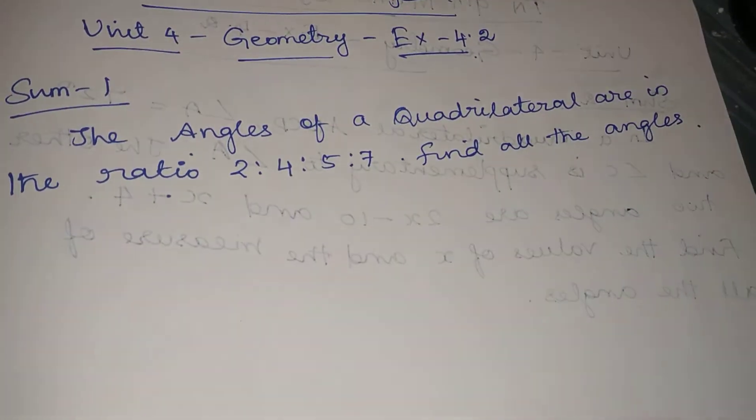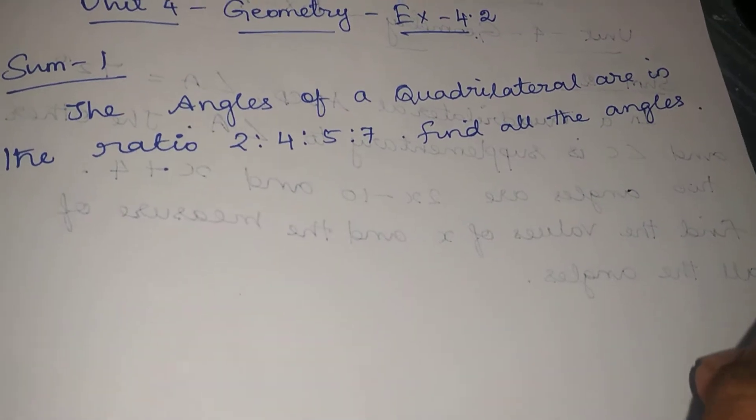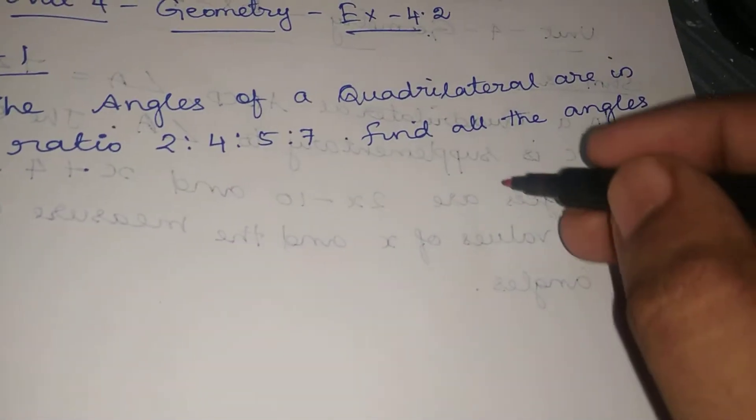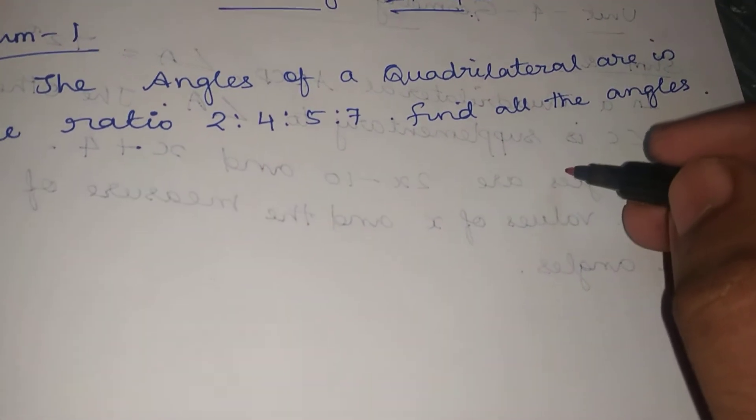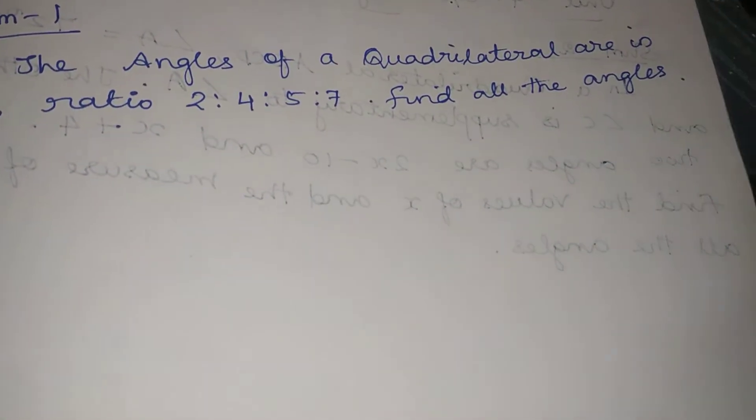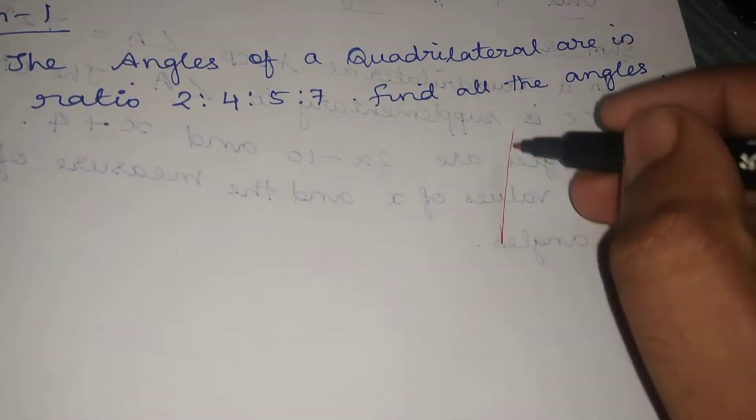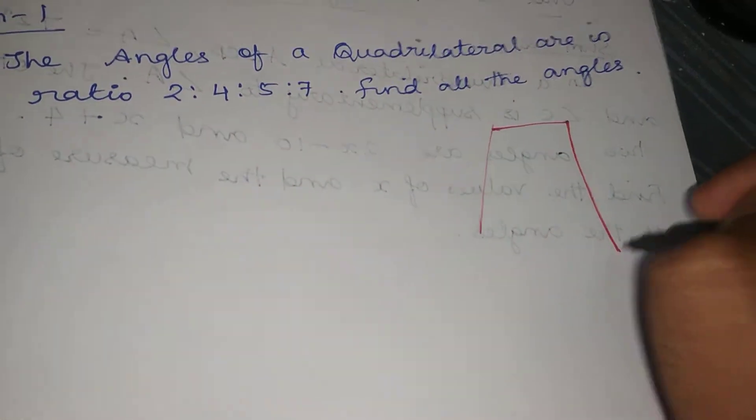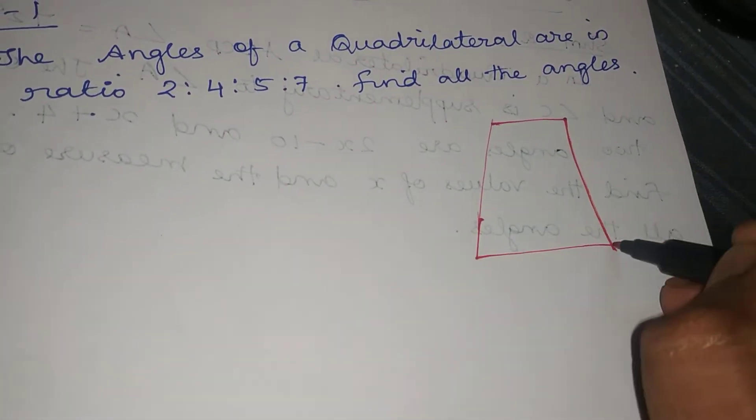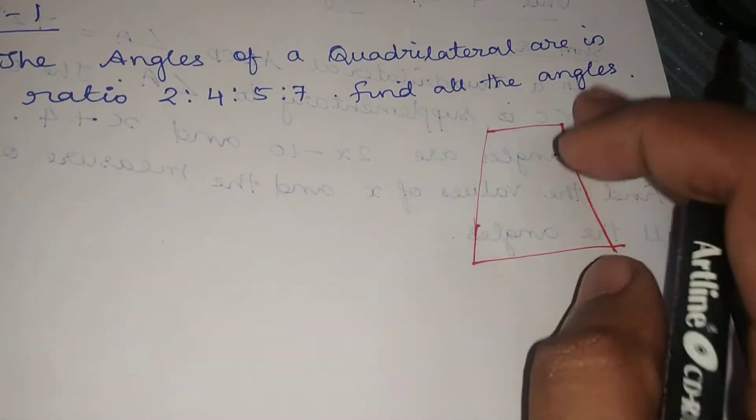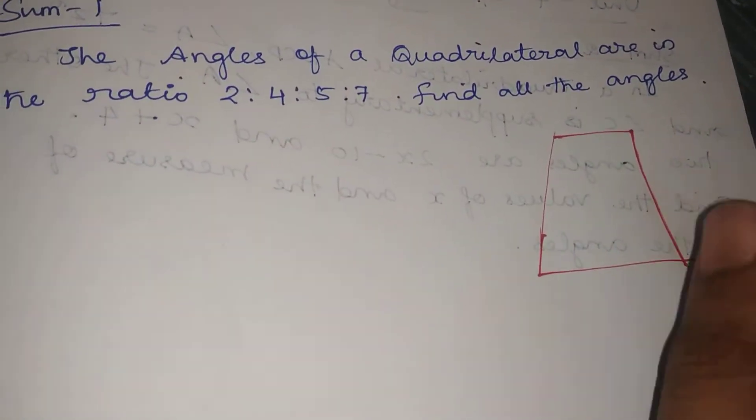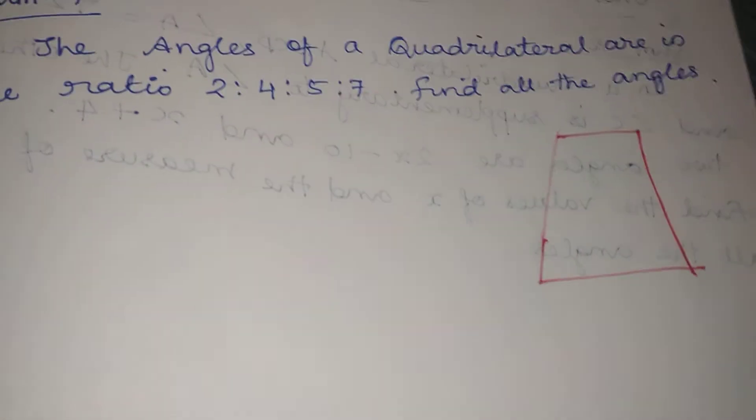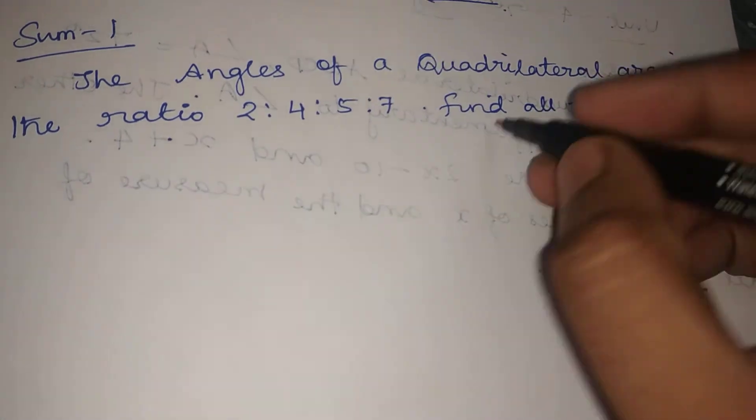Now, for a quadrilateral, a quadrilateral has four angles. When you add these angles of a quadrilateral, the sum measures 360 degrees.